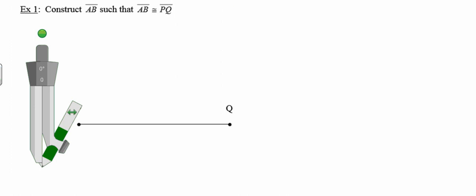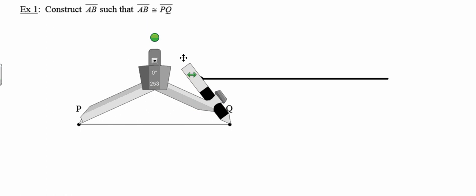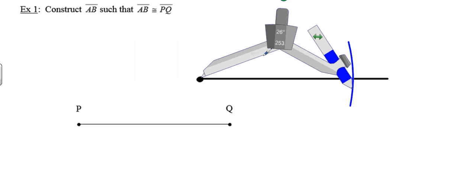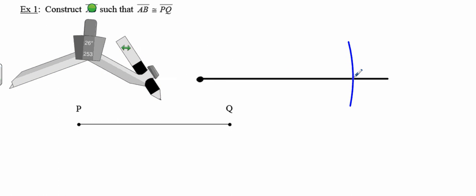We're going to start by constructing a segment congruent to a given segment. In example one, we want to construct line segment AB such that AB is congruent to the given segment PQ. I'll grab my straightedge and draw a line segment a little bit longer than the one I want to construct, put an endpoint at one end, then use my compass as a measuring device — opening it to the length of PQ — and draw an arc.